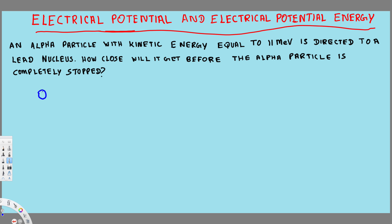Basically, the alpha particle has two protons and two neutrons, but here we only care about the protons. So it has two protons — it's the nucleus of the helium atom — and it is moving toward the lead nucleus in this direction.